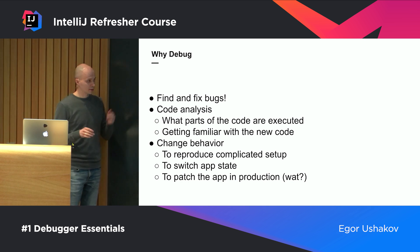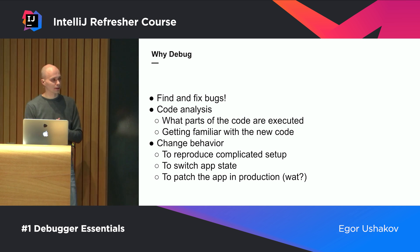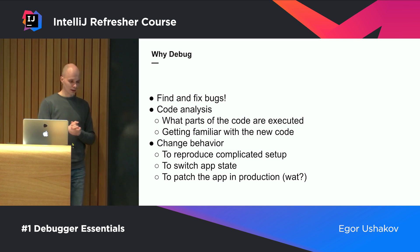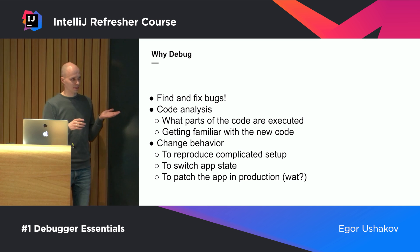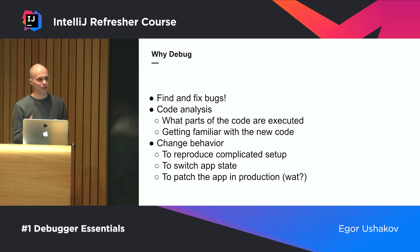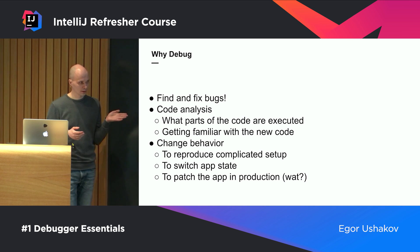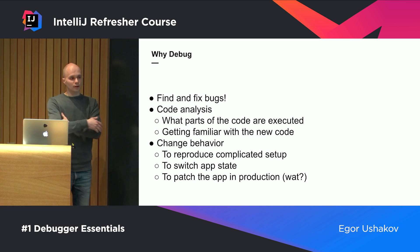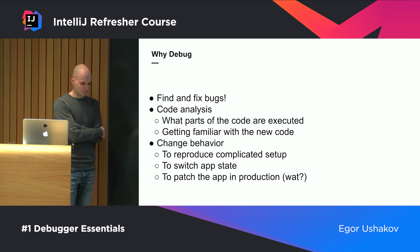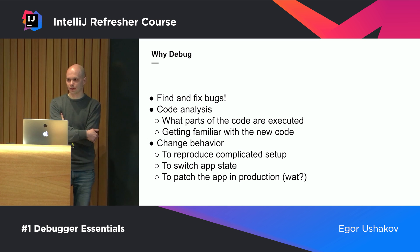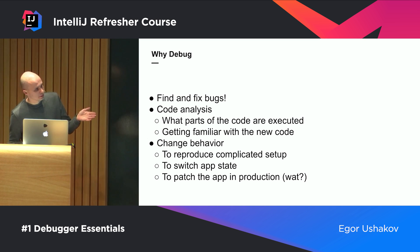I've heard about at least one company who did patching of a real production application. Because the debugger has hot swap ability, which allows you to change the code of methods on the fly, you can fix bugs even in production — I don't say it's a good way, but it's possible. I've done that more than once with my own IntelliJ IDEA: if I find a bug blocking my everyday activities, I can quickly attach the debugger, fix the bug, hot swap my working IDEA, and continue working until the next nightly build is available with the fix.